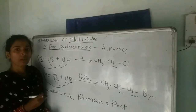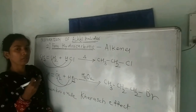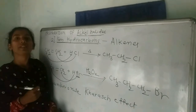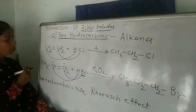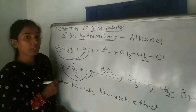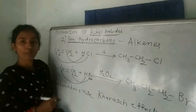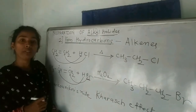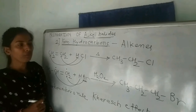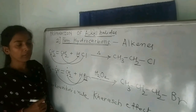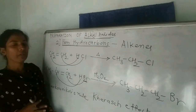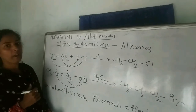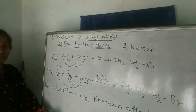To summarize the method from alkenes: hydrogen and halogen are added across the double bond. If the alkene is unsymmetrical, follow Markovnikov's rule. If the reaction is carried out in the presence of peroxide, the peroxide effect (anti-Markovnikov addition) is observed, but only with HBr. Always identify the double-bonded carbons first, then add hydrogen and halogen accordingly.